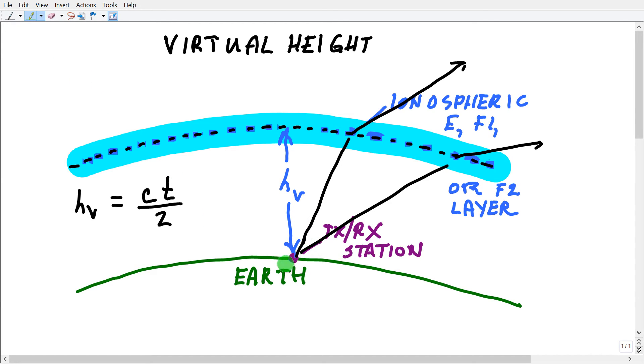But we're interested in frequencies where the signal returns to Earth even when it's transmitted straight up. If you transmit a signal straight up and you hear the echo of your own signal back after a length of time t in seconds, you can determine the virtual height or the apparent height of that layer, h sub v, in meters, by multiplying the speed of light in meters per second, which is roughly 3 times 10 to the 8th, times the length of time in seconds and dividing by 2.